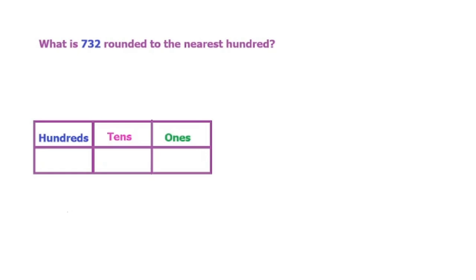This is a table that shows where each of the values would go. If we were to write that number here, seven would go here, three would go here, and two would go here.